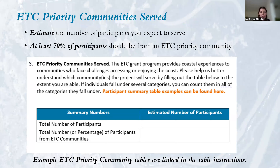Question three is on ETC priority communities served. It helps us better understand how many participants from a priority community the grant will serve. Priority communities are those who face challenges accessing or enjoying the coast. Keep in mind, 70% of your participants must be from an ETC priority community — this has been raised from last year's 60% minimum.